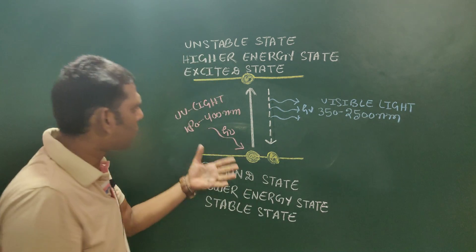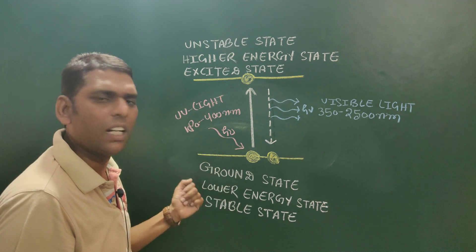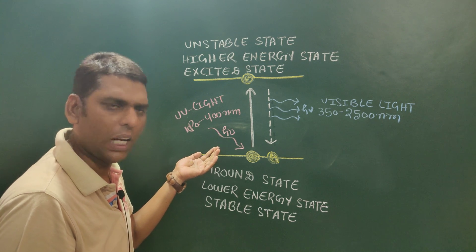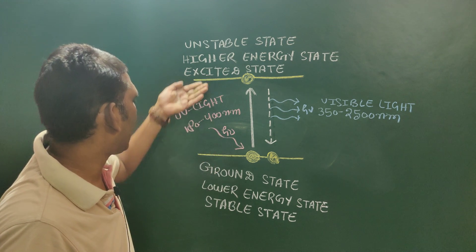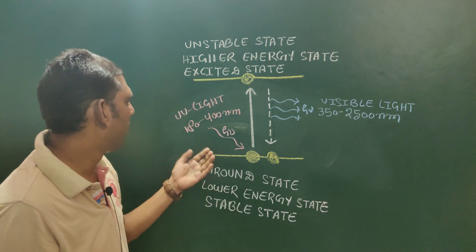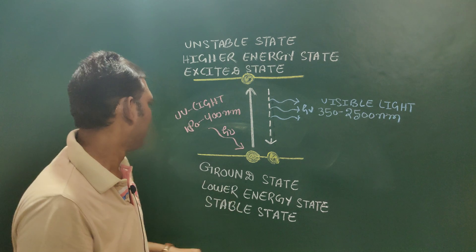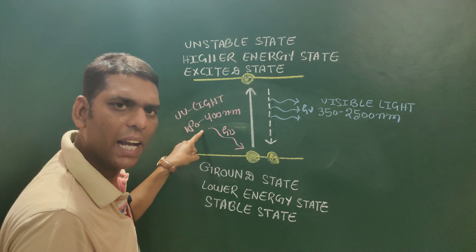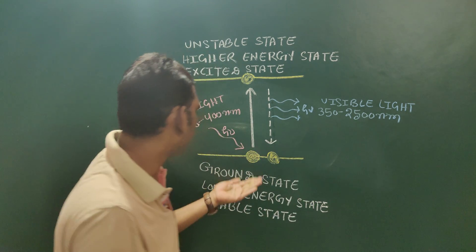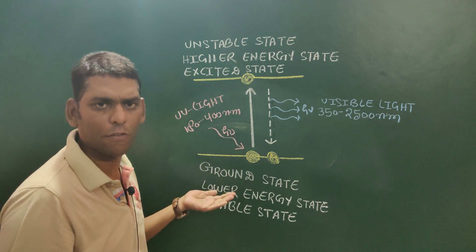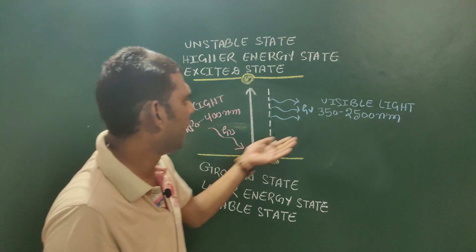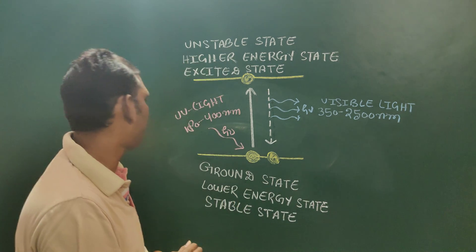In the ground state, the molecule absorbs a high amount of energy, and when coming back from the excited state to the ground state, it emits a low amount of energy. This is because wavelength and energy have an inverse relationship — if wavelength is shorter, energy is high; if wavelength is longer, energy is low.